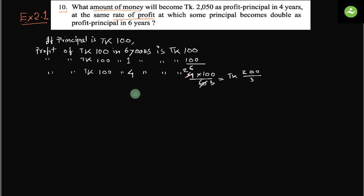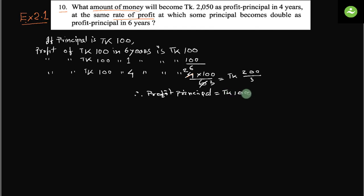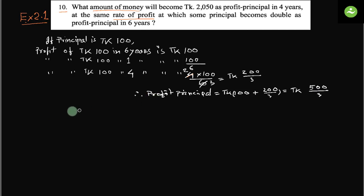So profit-principal equals principal plus profit. Principal equals Taka 100 plus 200 by 3, which equals 300 by 3 plus 200 by 3, giving us Taka 500 by 3. So we can say if the profit-principal is Taka 500/3.